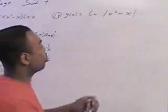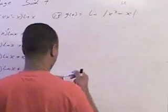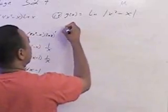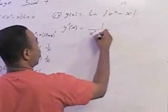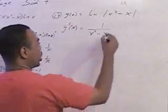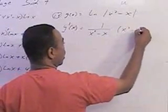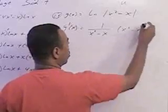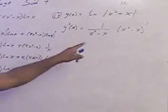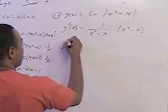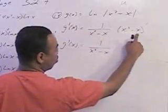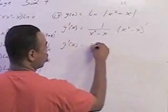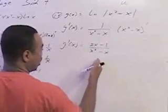Let's take a look at problem 24. This is a function u, so when we take the derivative we'll take the derivative of the outside: 1 over x squared minus x, times the derivative of x squared minus x. The derivative of that is 2x minus 1, so we put that in the numerator — 2x minus 1 over x squared minus x.